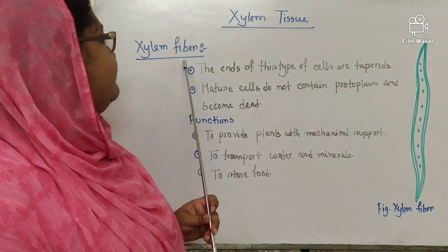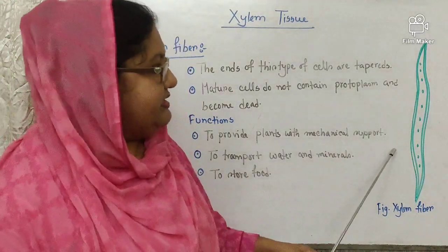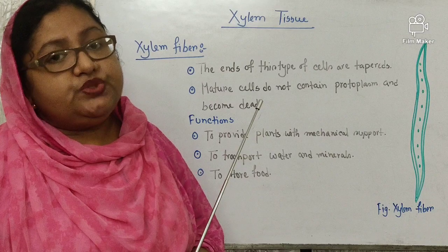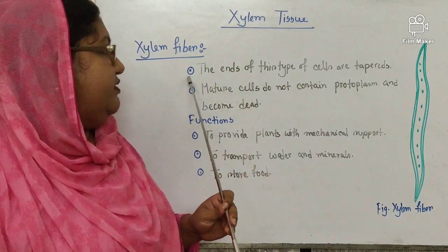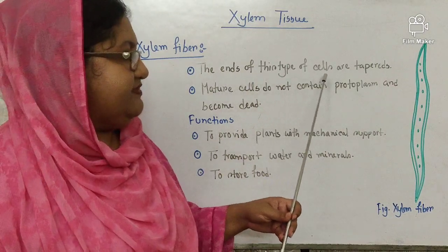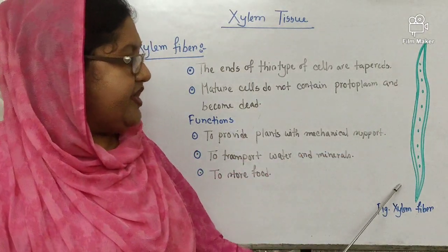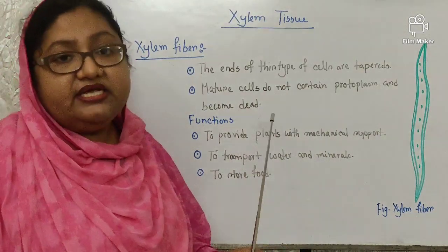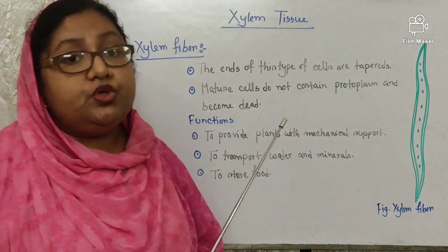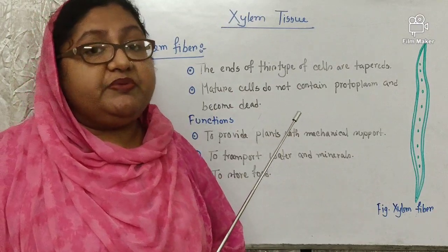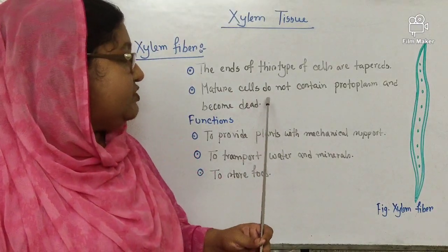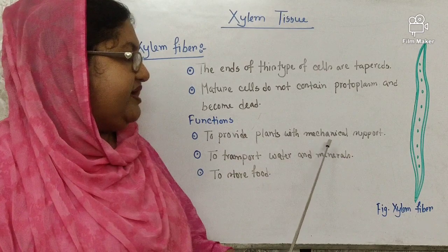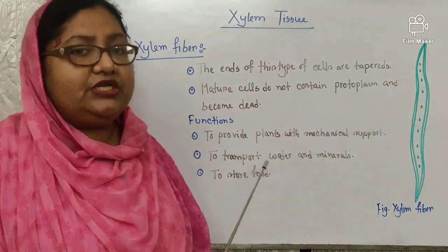Now, the characteristics of xylem fiber. The sclerenchyma-like tissue present in xylem is called xylem fiber. The ends of these cells are tapered, as you can see. Mature cells do not contain protoplasm and become dead — by losing their protoplasm, they become dead. The function: to provide plants with mechanical support, to transport water and minerals, and to store food.